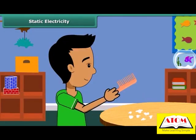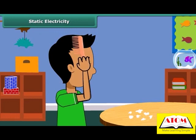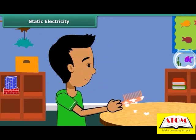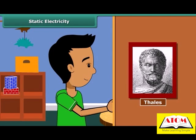When we comb our hair with a plastic comb and take it near small pieces of paper, the paper pieces are attracted toward the comb. We then say that the comb is charged with electricity. This was first noticed by a Greek man named Thales over 2,500 years ago.